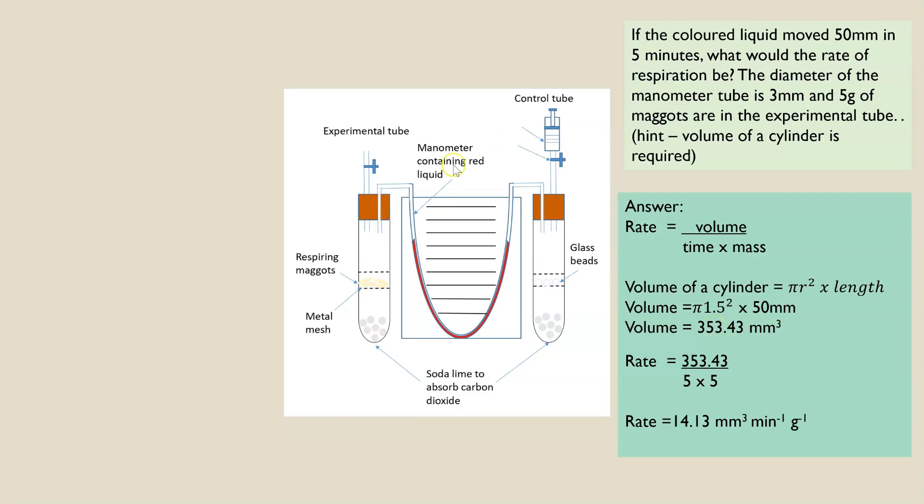So the volume of air that has moved into those maggots, or into the tube at least that we can confirm, is 353.43 millimeters cubed. However, they want you to give this as a rate, so we need to divide by the time taken and also take into account the mass of maggots that we used. And they tell you at the top here that the time it had taken was five minutes, so we're dividing our answer by five. And it was five grams, so divide by five again, or five by five, divide by 25. Either way, you'll get the same answer, which is 14.13 millimeters cubed per minute because we divided by the five minutes, and per gram because we divided by the five grams.